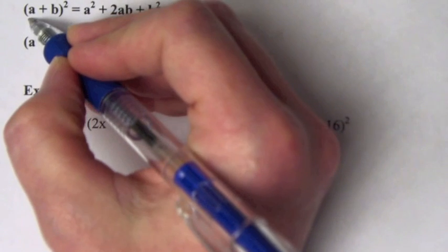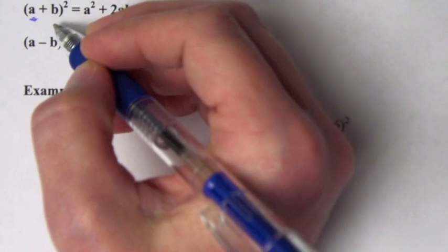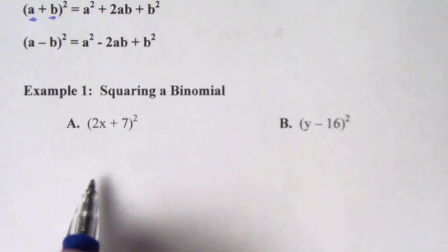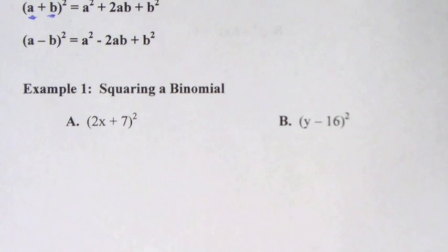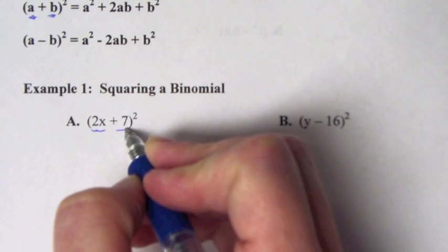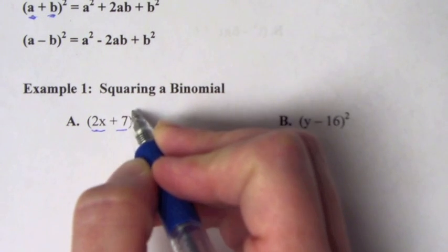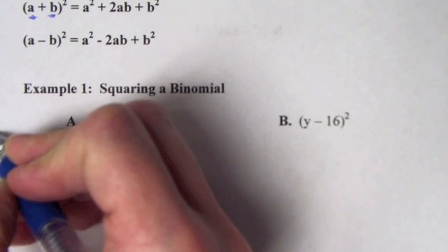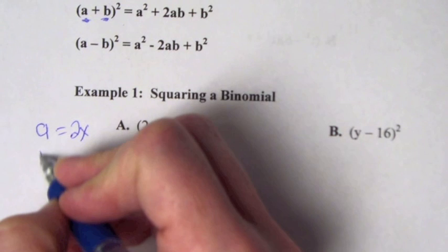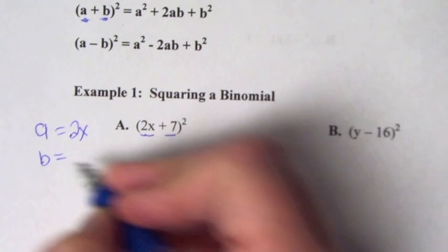So 'a' represents something in front of the plus sign, and what comes after the plus sign is your 'b'. Same thing for the minus. So if we look at example one using those formulas, this is in the form (a + b) squared. Our a is 2x, and our b is 7.